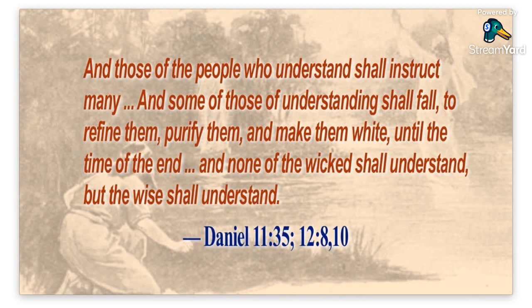Daniel 11:35, Daniel 12:8, and Daniel 12:10 have similar language — it's parallel structure, repetition. 'Those of the people who understand shall instruct many, and some of those of understanding shall fall to refine them, purify them, make them white until the time of the end. None of the wicked shall understand, but the wise shall understand.' The whole flow from Daniel 11:35 through the end of chapter 12 is that as the Jews move forward in history, some people would be wicked with no understanding and some would be righteous and would understand.